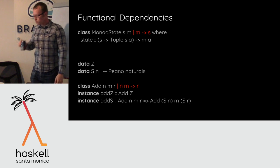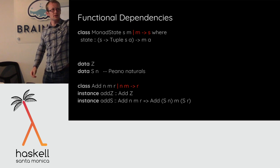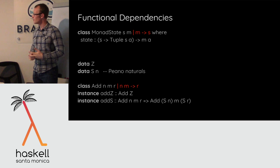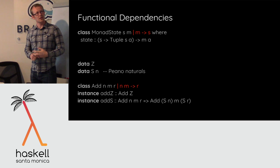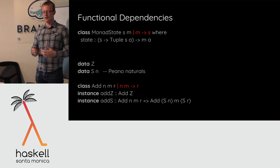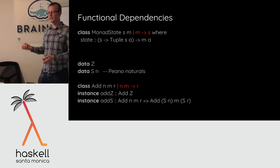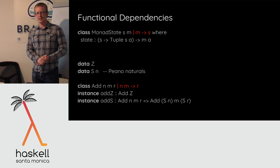Functional dependencies let us start doing type-level programming. The point is that the relation defined by a class is not just a relation — I can say it's actually a functional relation, a function from one type argument to the other. If you have the same M, you have to have the same S. This lets us write type-level functions. We don't have dependent types in the sense of types depending on values, but we can do basic versions of a lot of the things you'd do in dependently typed languages.